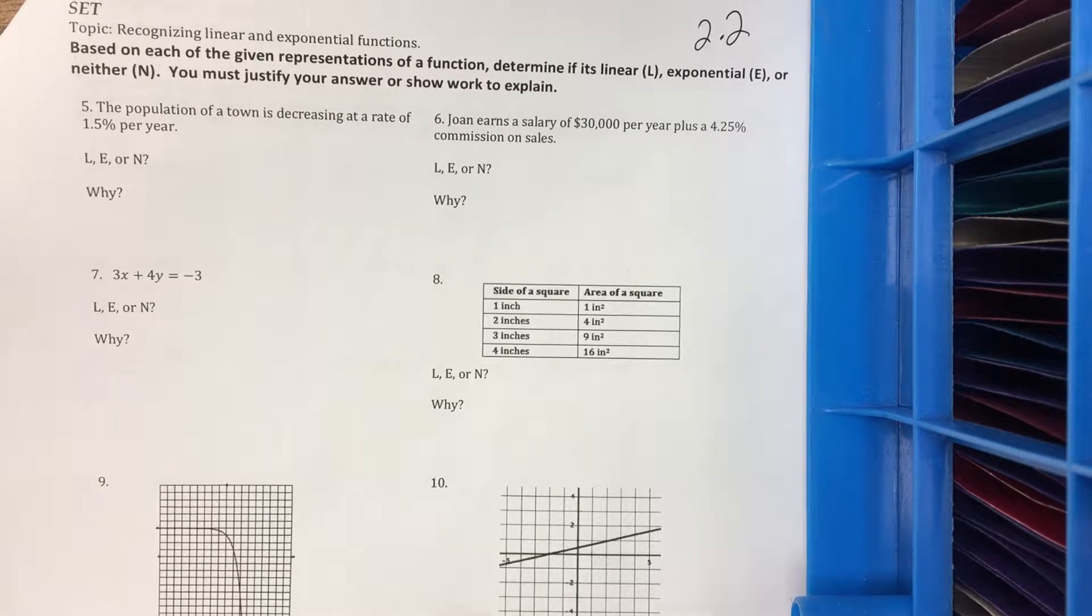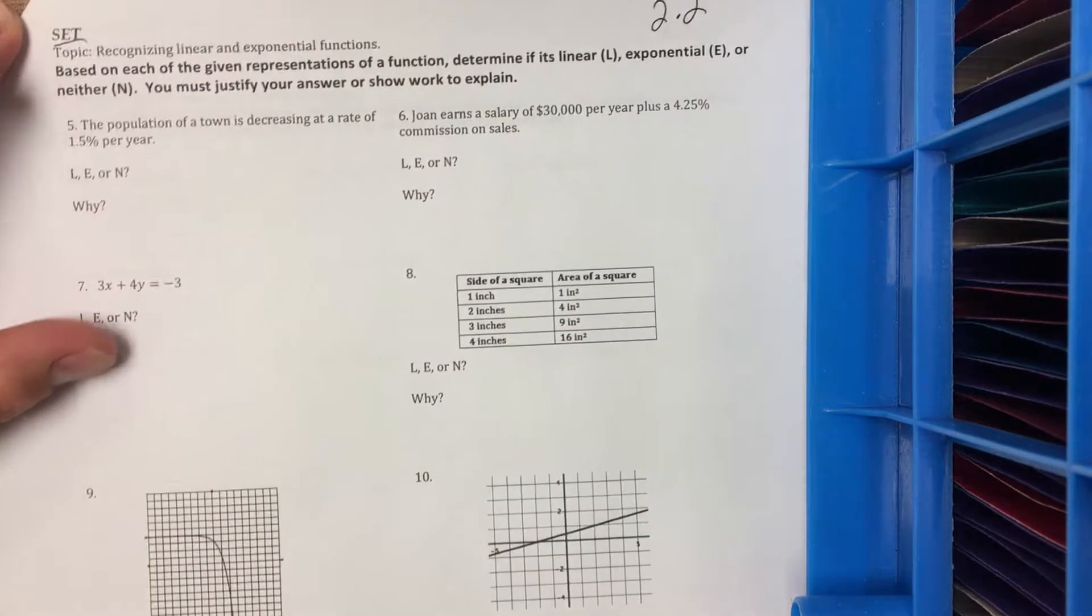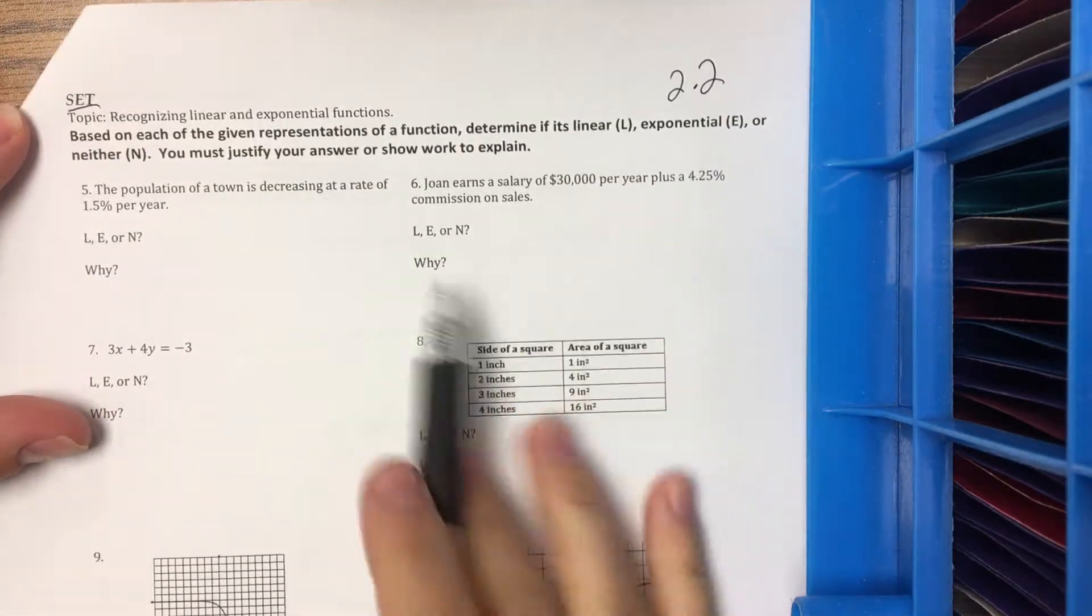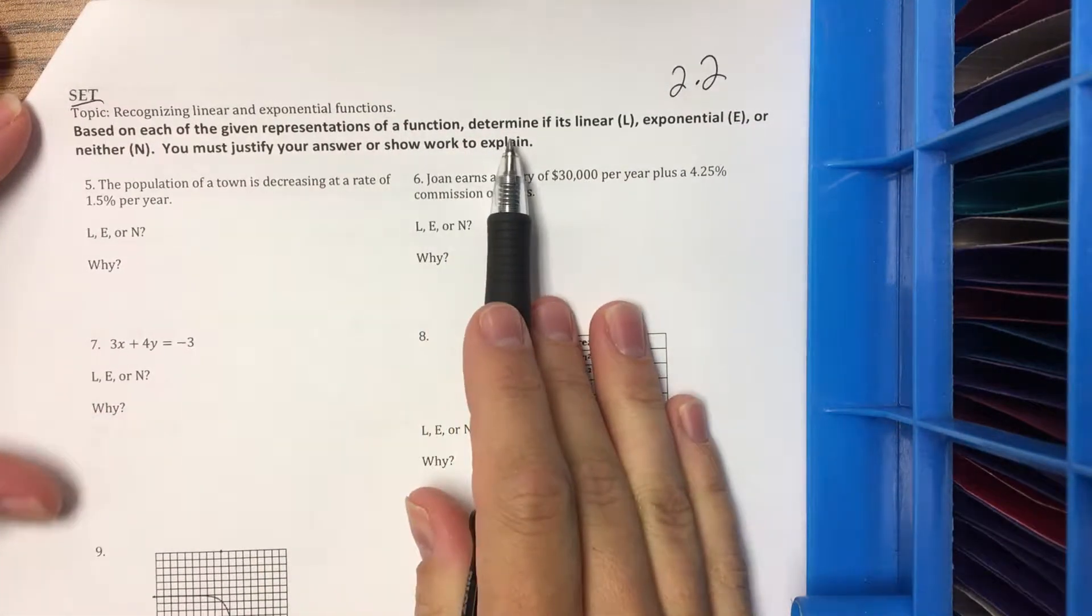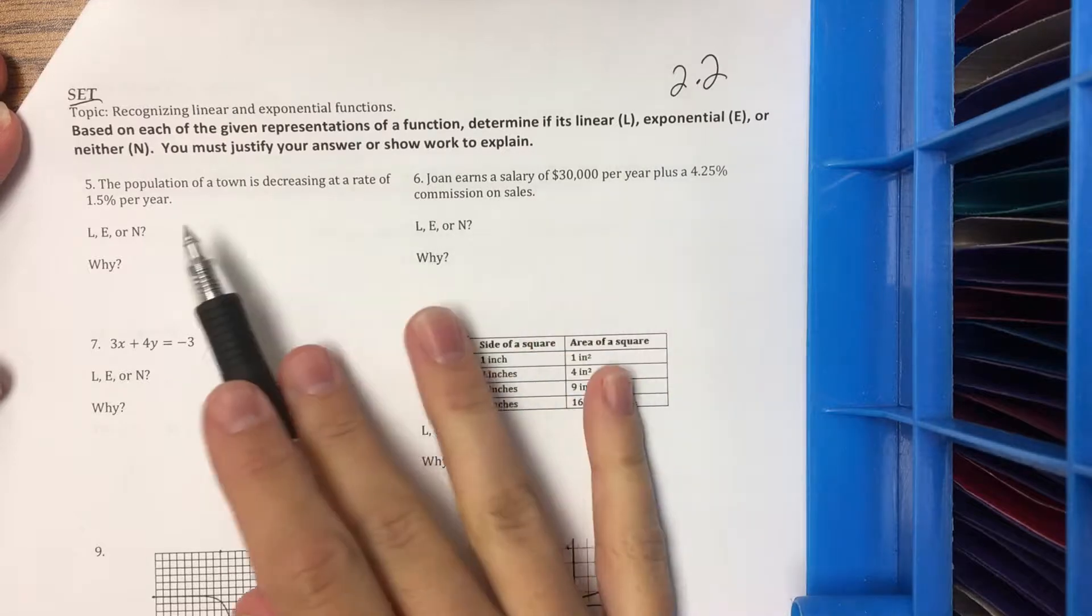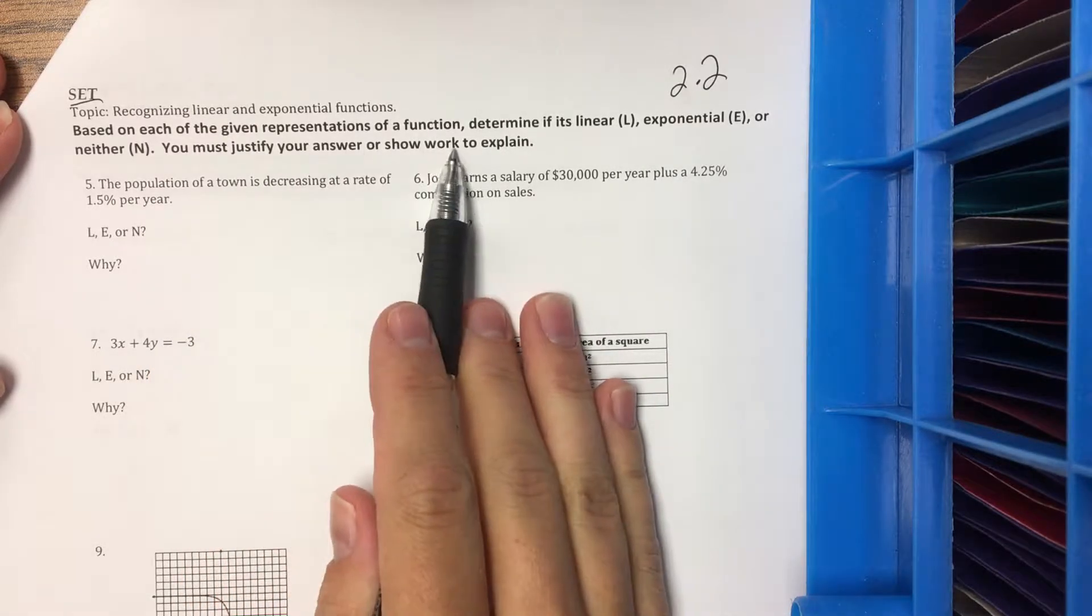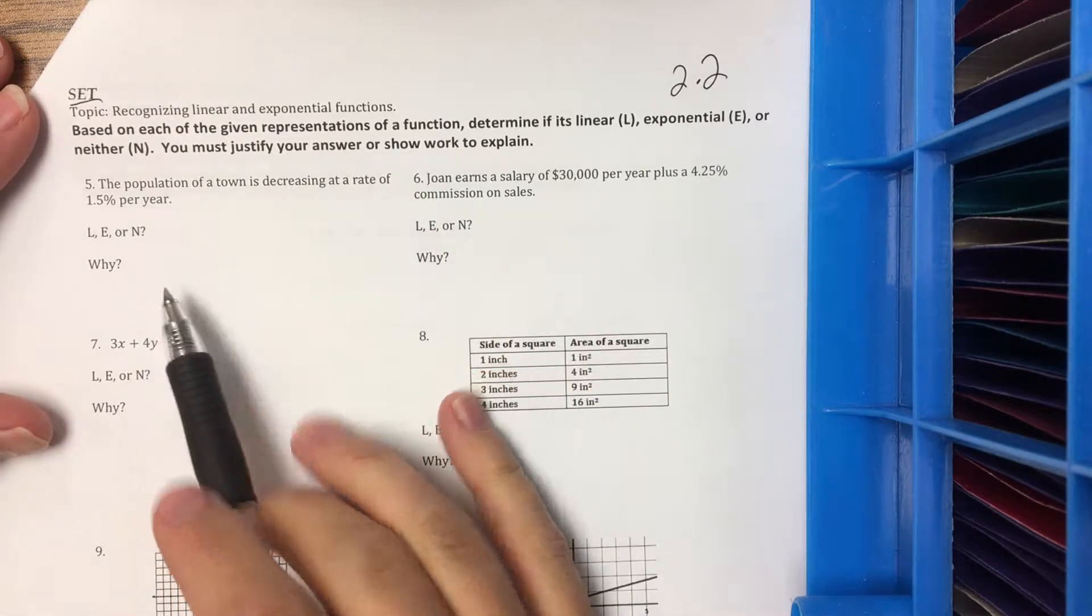Here we have the 2.2 Ready, Set, Go, and I'm looking at the set. So we have different representations. We want to determine if it's linear, exponential, or neither, and we need to justify by showing work or explaining.